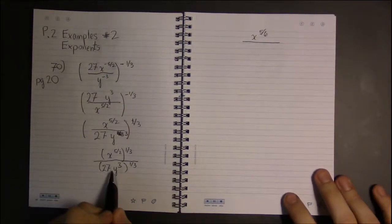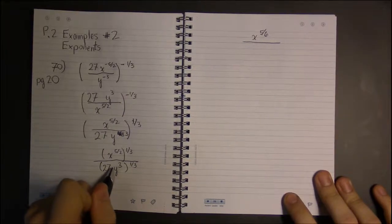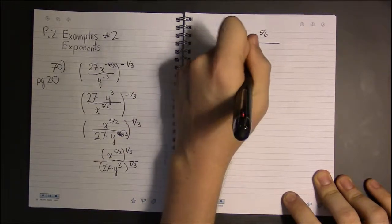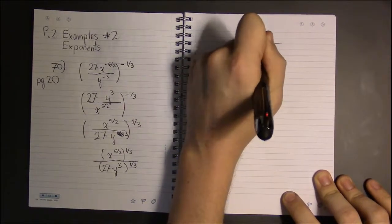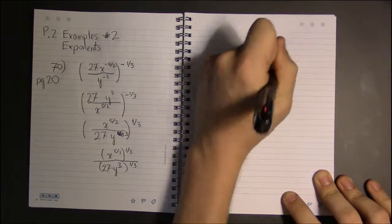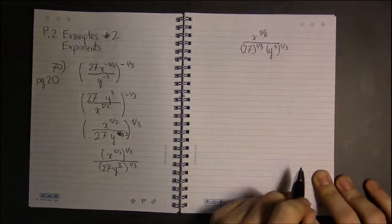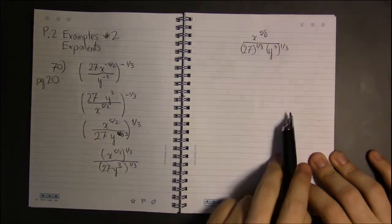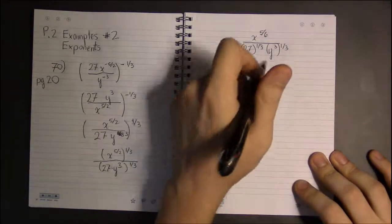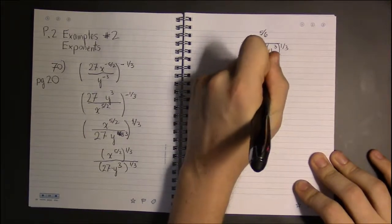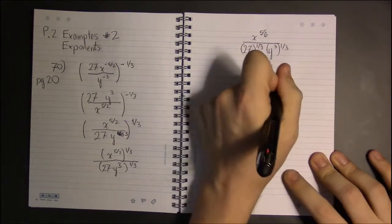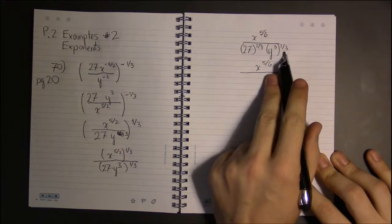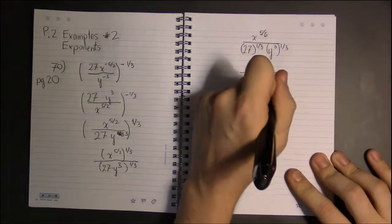In the denominator we have the exponent of a product, so we distribute: 27 to the one-third times y-cubed to the one-third. The numerator is as simple as we can get it. For y to the third to the one-third, 3 times one-third is just 1, so y cubed to the one-third simplifies to y to the first.